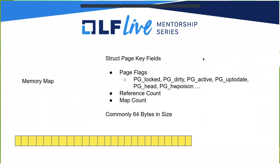Struct pages have some fields that describe each page. It has flags that describe the state of that particular page — things like whether it's locked, dirty, active, up-to-date, whether it's poisoned, has a memory error associated with it, or is a PG head for compound pages. It also has a reference count — how many people have a reference to that page — and a map count, which is a count of how many times that page has been mapped into user space. If you look at a struct page in Linux, it's a huge union data structure, but it's really 64 bytes in size, and there's one for each page in the system.